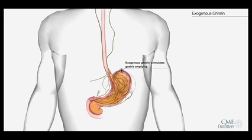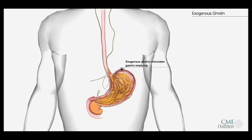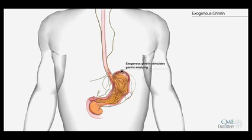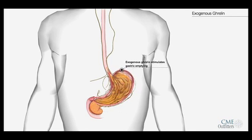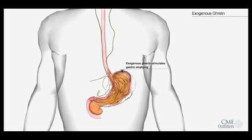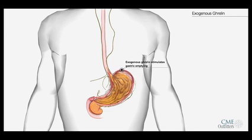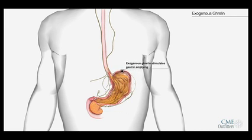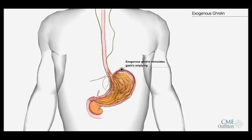When ghrelin is administered from outside, it can bypass this damaged nerve signaling pathway and directly stimulate the ghrelin receptors on the myenteric neurons in the stomach. This, in turn, will produce active contractions of the stomach muscle, resulting in improved emptying of gastric contents.